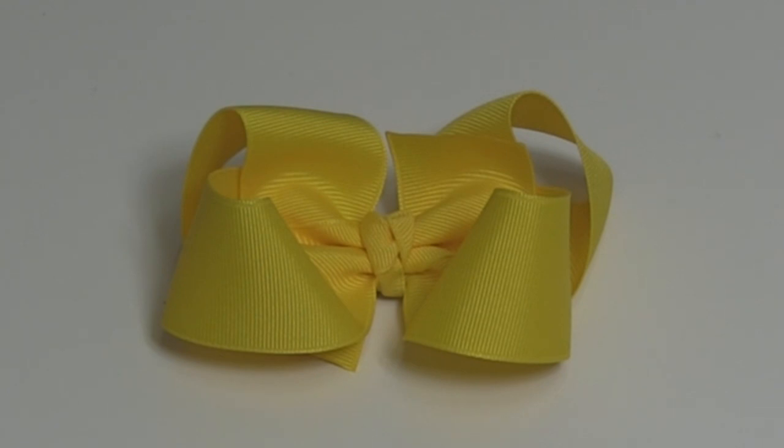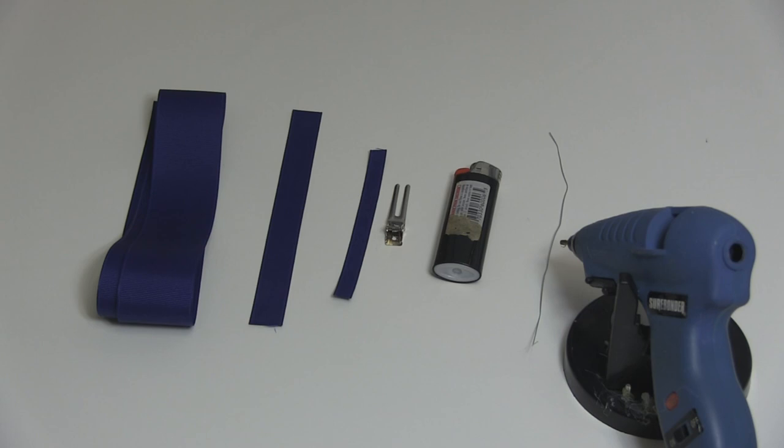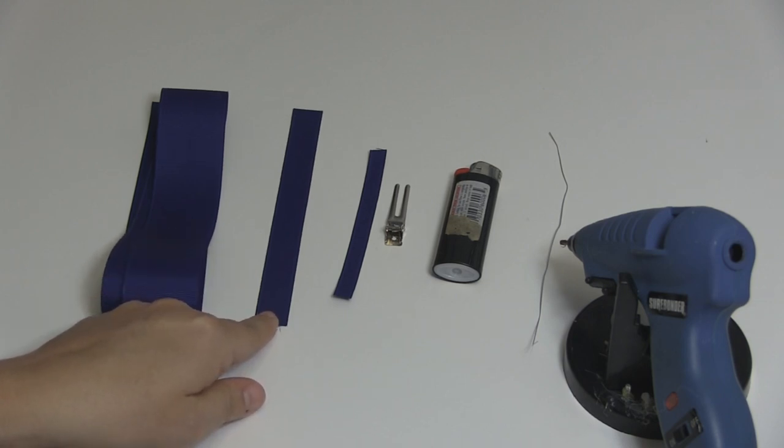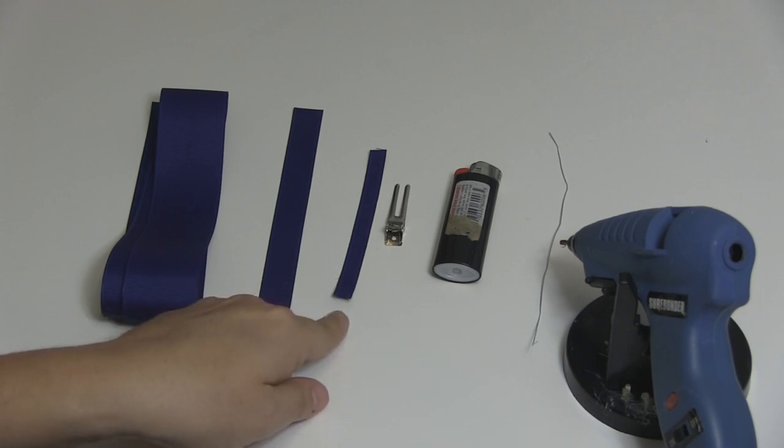Let's get started with the supplies you're going to need. To make this 4 inch hair bow you're going to need 36 inches of 1.5 inch ribbon, 6.5 inches of 5.8 inch ribbon for the knot, and 4.5 inches of 3.8 inch wide ribbon.